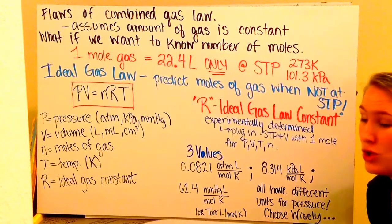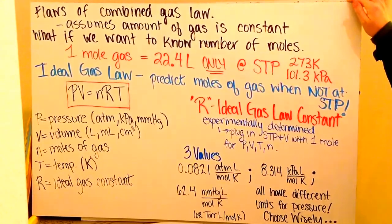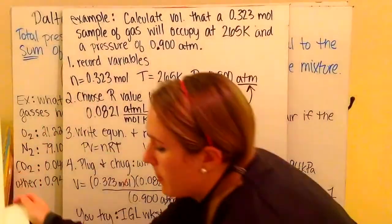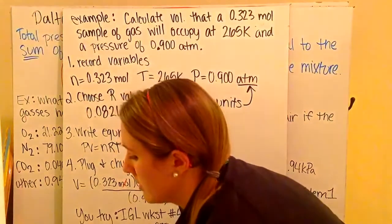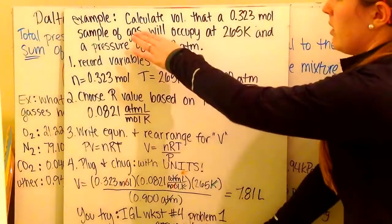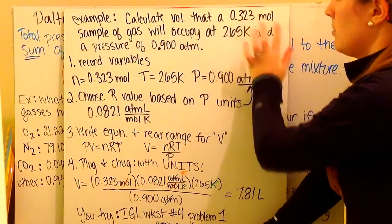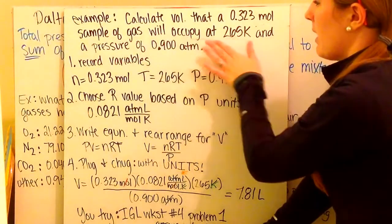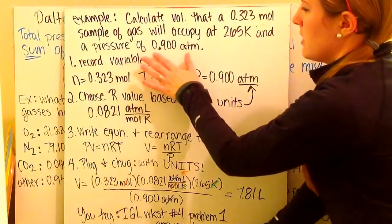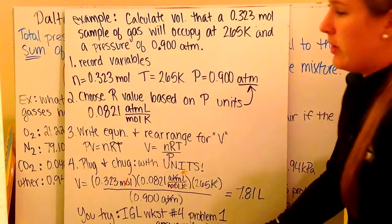So, when you're doing these problems, you need to choose wisely. So, let's go through an example. We're going to calculate the volume that a 0.323 mole sample of gas will occupy at 265 Kelvin and a pressure of 0.900 atmospheres. First step is we're going to record our variables.